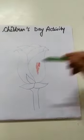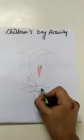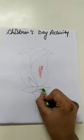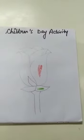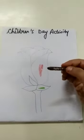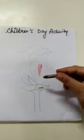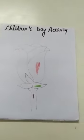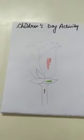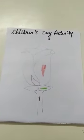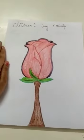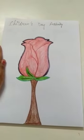And green color fill in the leaves. And brown color fill in the stem. Color the rose like this.